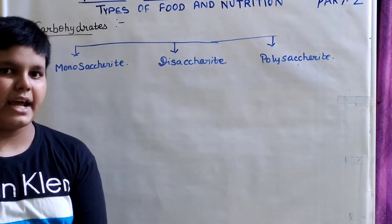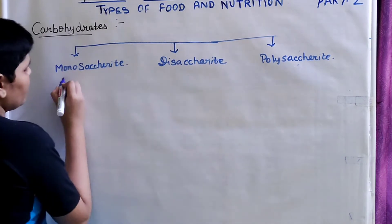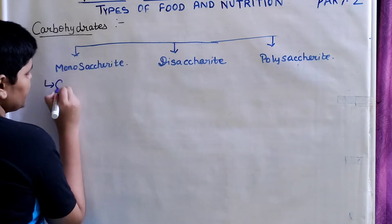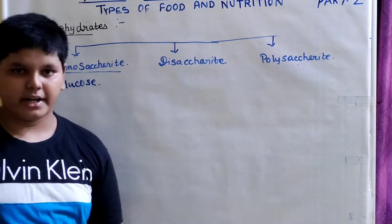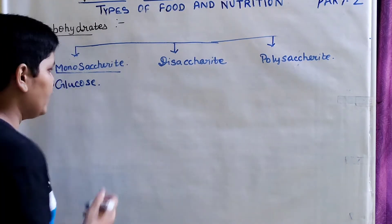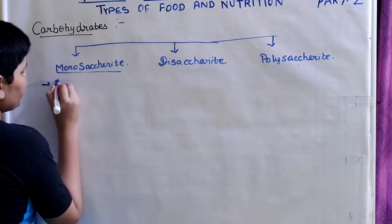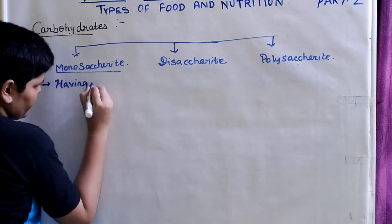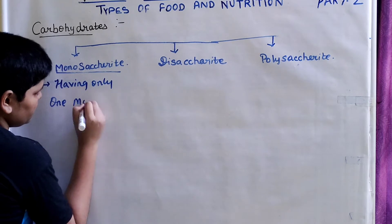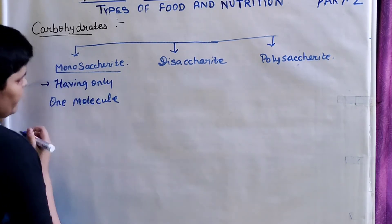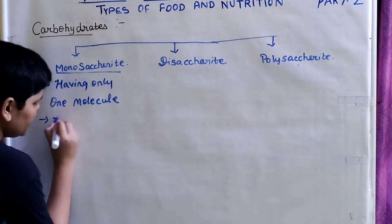Mono means one and di means two. If you take monosaccharides, examples include glucose. What are monosaccharides? They are the sugars which have only one molecule. Having only one molecule makes them monosaccharides.